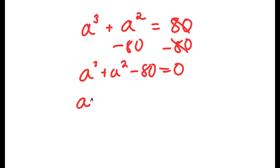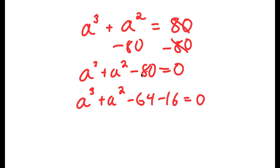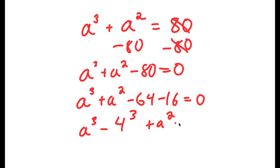I'm going to rewrite this as a to the power of 3 plus a squared minus 64 minus 16 is equal to 0. I simply wrote negative 80 as negative 64 minus 16. Now negative 64, I'm going to rewrite that as negative 4 to the power of 3. So I have a to the power of 3 minus 4 to the power of 3 plus a squared minus 16, and I'm going to rewrite 16 as 4 squared.